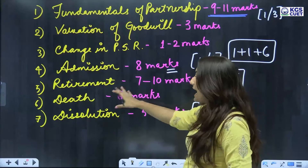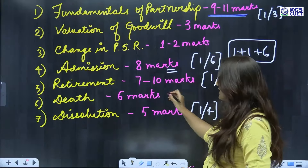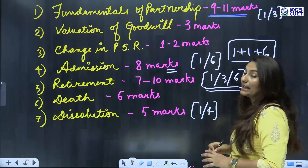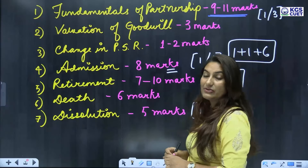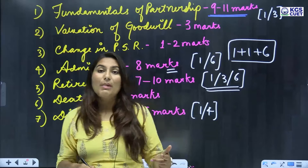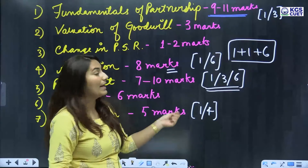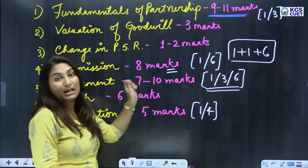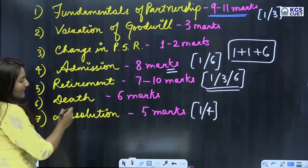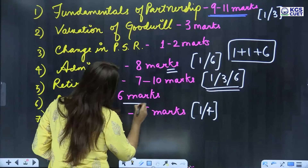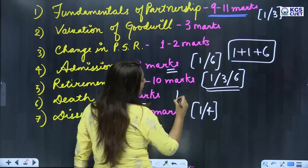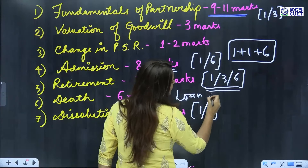From Retirement of Partner, you will get 7 to 10 marks. The breakdown includes 1 mark, 3 marks, and 6 marks questions. From retirement, you can specifically get a 6-mark question which can include a loan account question.